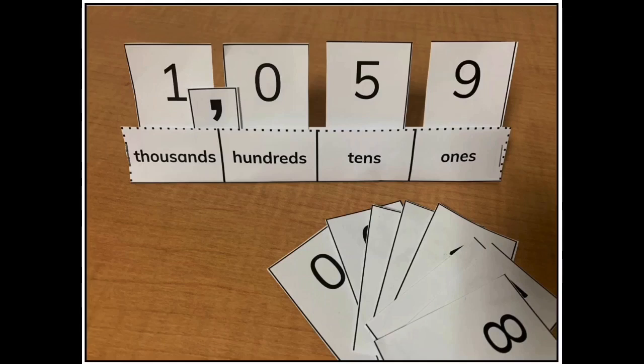The thousands period is composed of the one thousands, ten thousands, and hundred thousands. However, in second grade students will only represent numbers to the one thousands place. Here you can see we have represented 1059.